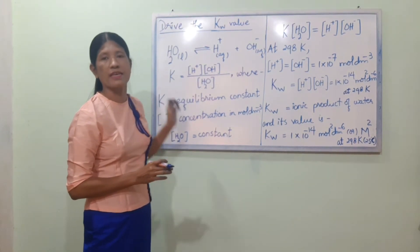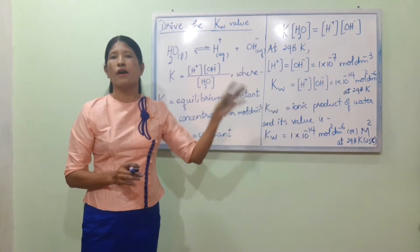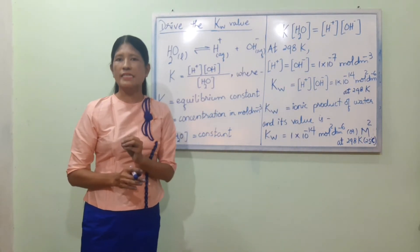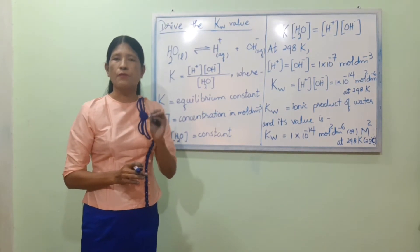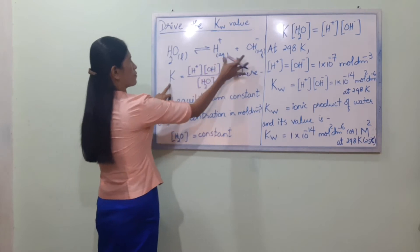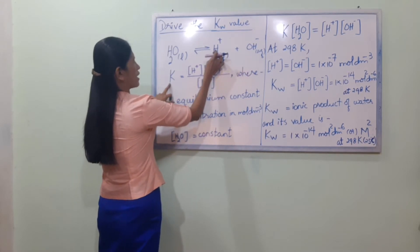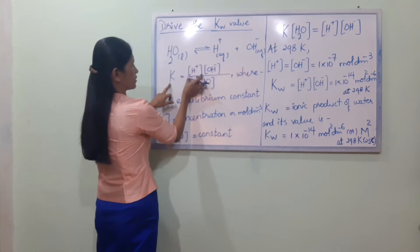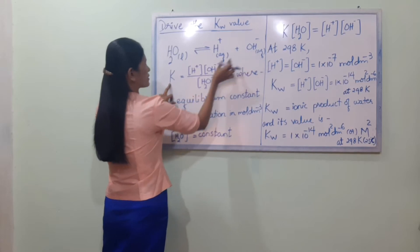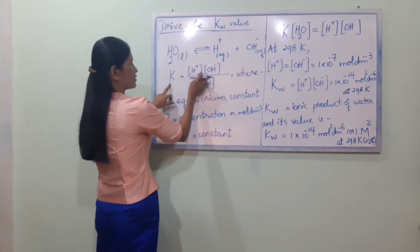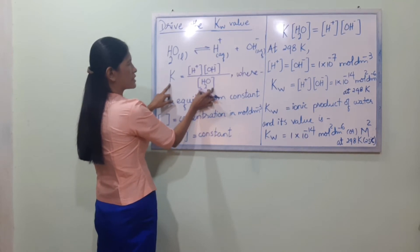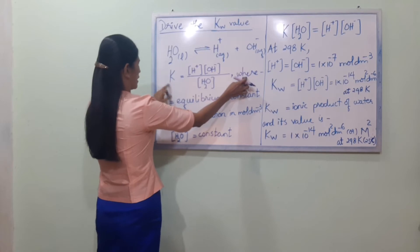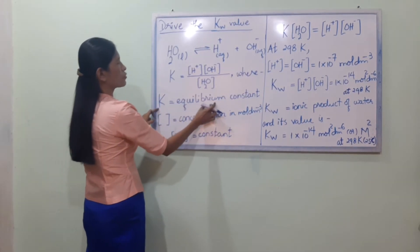The equilibrium constant K is equal to the concentration of H⁺ ion times the concentration of OH⁻ ion, divided by the concentration of H2O. So K equals the equilibrium constant expression.